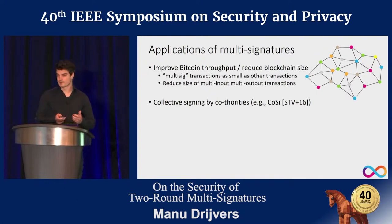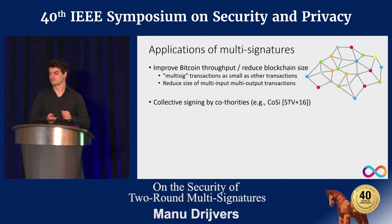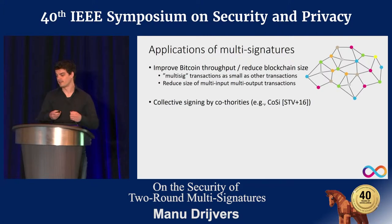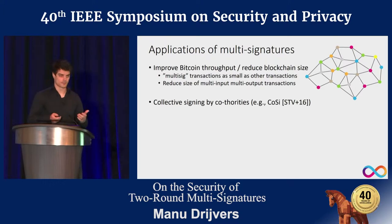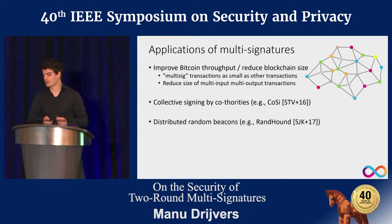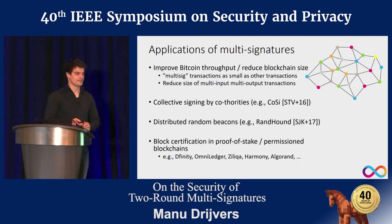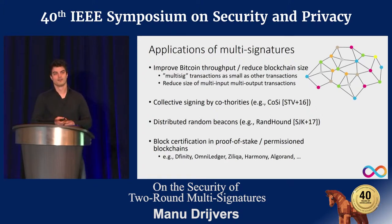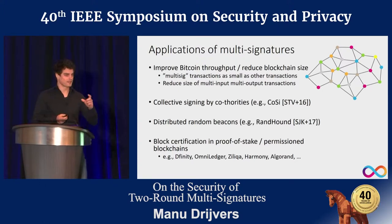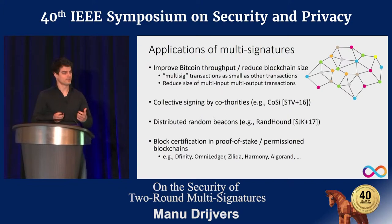A different use case is distributing trust in authorities — for example, reducing trust in certificate authorities by splitting them into many small pieces that all need to sign off to generate a certificate. Multi-signatures have also been proposed for generating randomness beacons. A fourth use case is in permissioned or proof-of-stake blockchains, where a committee of users needs to approve adding a block by all signing it.